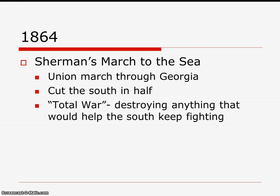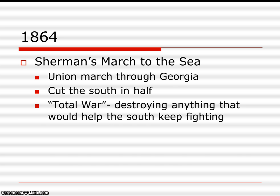Also in 1864, General Sherman conducts his March to the Sea, marching soldiers down through Georgia to cut the South in half. He follows a total war method, destroying absolutely anything and everything that would help the South keep fighting — roads, rail lines, fields that could grow food. He burns and tears everything up, which reduces Confederate morale and keeps supplies very limited.